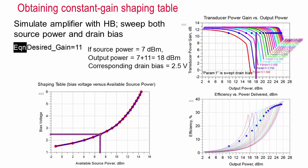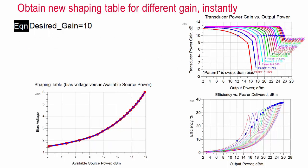You can obtain a new shaping table immediately just by changing the desired gain value. Here it is set to 10. Now, if the source power is 7 dBm, the output power needs to be 7 plus 10 equals 17 dBm. Drawing a line up from the 17 dBm output power point until it crosses one of the gain versus output power lines at 10 dB, we see that the drain bias needs to be set to approximately 2.1 volts.